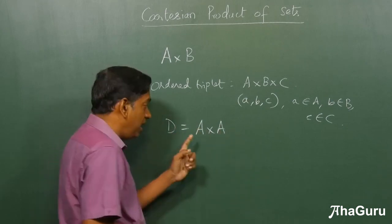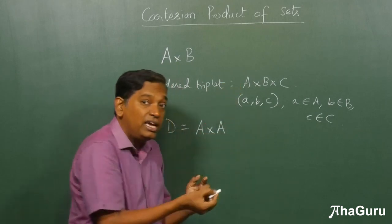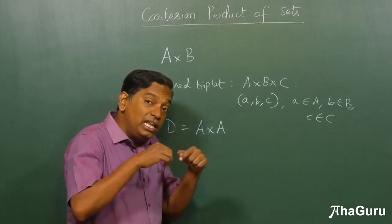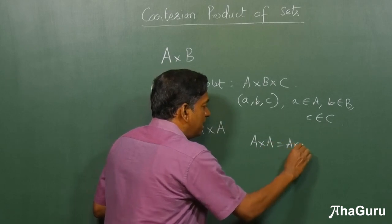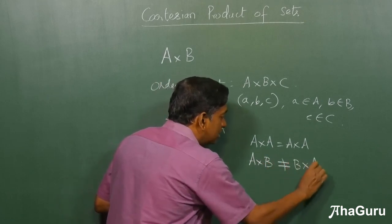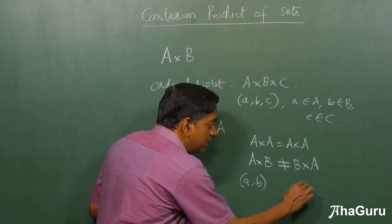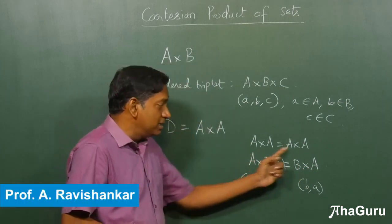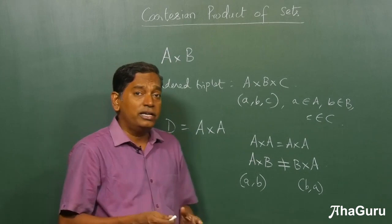You can also define a Cartesian product of A cross A. For example, suppose I define a new set D called A cross A. A cross A is a new set. And A cross A has nothing to do with set A itself, because A cross A will only have ordered pairs. Set A will have individual elements, like a, b, c or 1, 2, 3. A cross A will have only ordered pairs. Just like A cross B, we can also do A cross A. Of course, A cross A is the same as A cross A. But if you take A cross B, it is not the same as B cross A. The Cartesian product is not commutative, because this will have ordered pairs (a,b), whereas this will have ordered pairs (b,a). Unless the set A and set B are exactly equal, this will not be true in general. These are all some of the ideas related to the Cartesian product of sets.